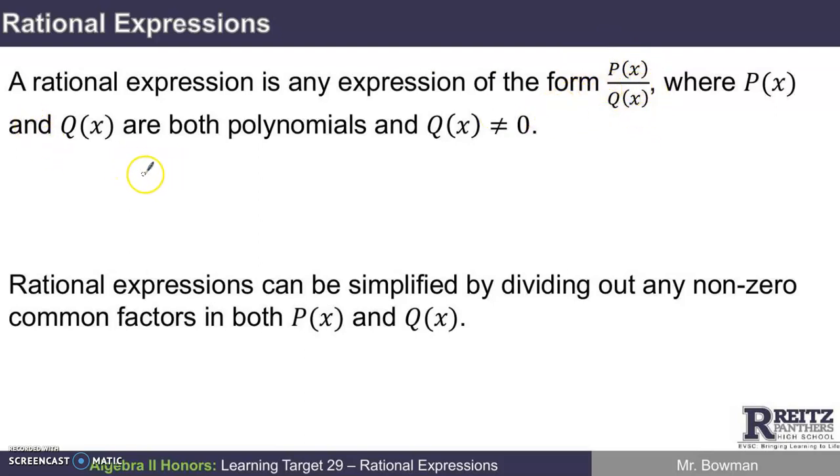So here's a couple of examples of some rational expressions. 3x squared minus 6x plus 1, all over 5x plus 10. Both of those are polynomial functions.